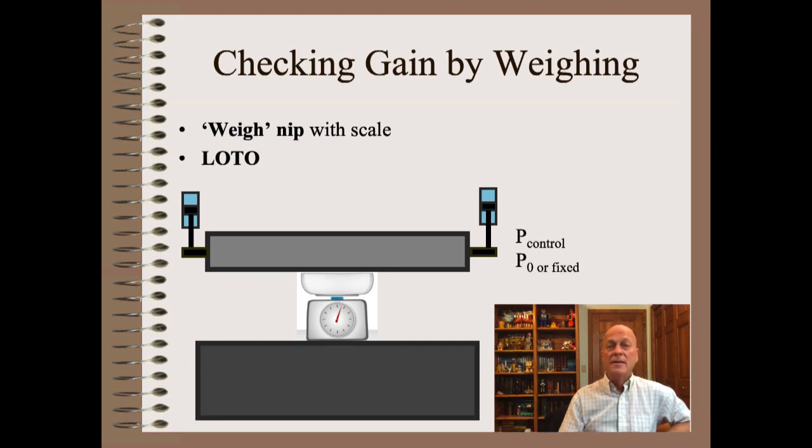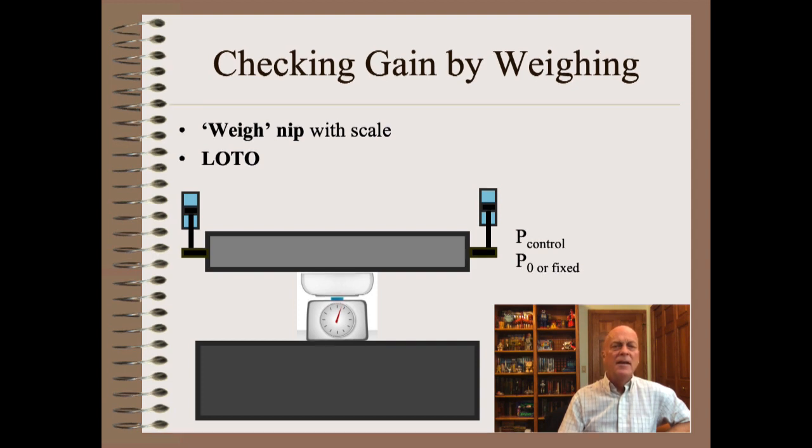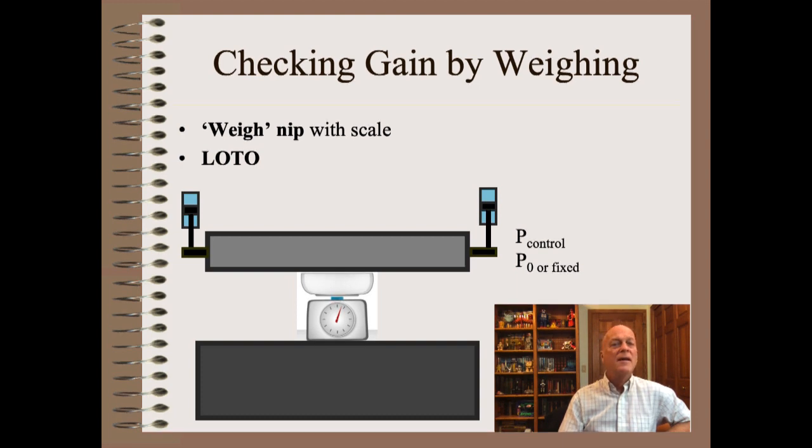Checking gain is simple enough in principle. We weigh the nip with a scale. This scale can be compression, such as shown here, or tension, such as the nip pulling against the strap attached to a force gauge. The challenge is the creative but safe rigging of a properly sized scale. Of course, this and all service work is done under lockout, tagout safety procedures. The nip is never activated except when all personnel are outside the safety barrier.